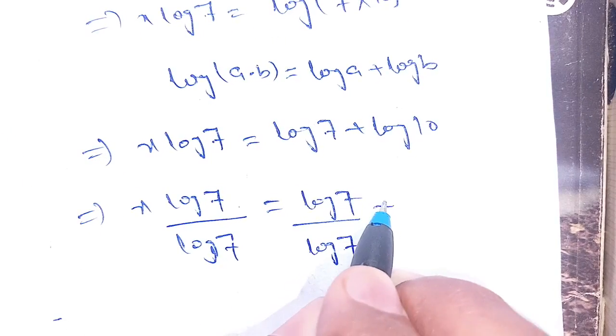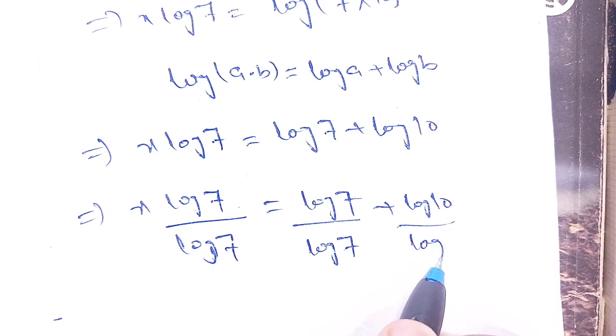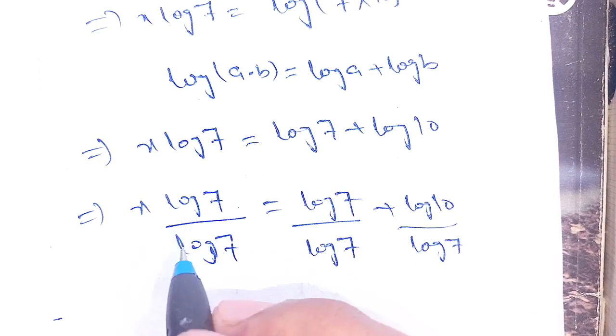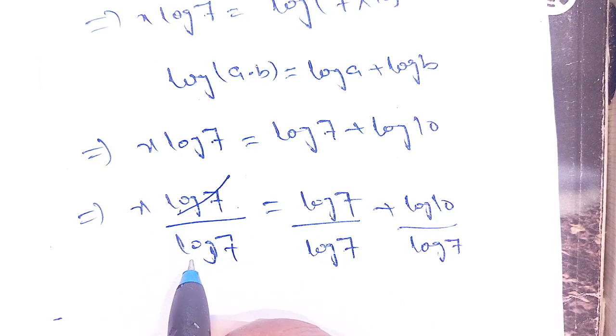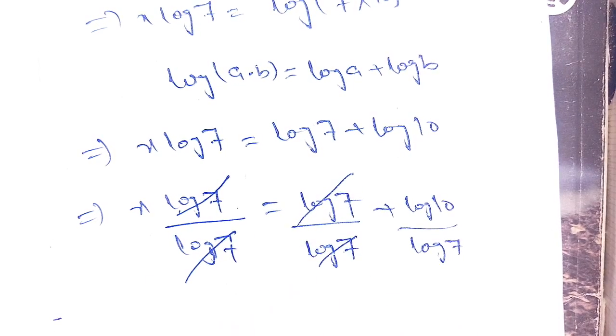Now we can cancel out this log(7) by this log(7), and this log(7) by this log(7).